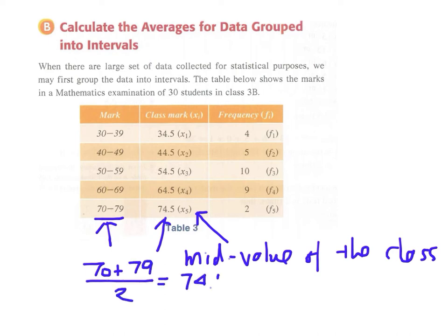This is very important. If the class mark is wrong, then all those products, if you want to calculate the mean, will be wrong. So make sure you get the correct class mark. It should be the mid value of the class.